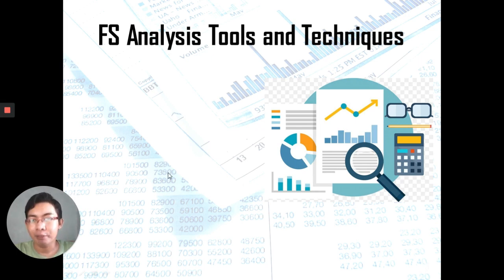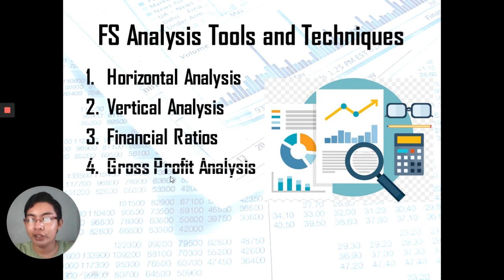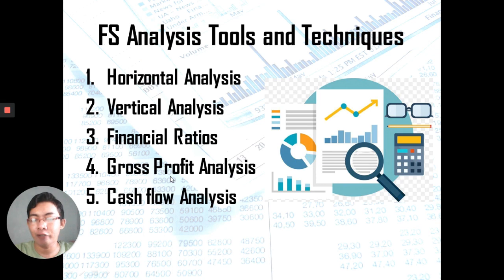Examples of Financial Statement tools include Horizontal Analysis, Vertical Analysis, Financial Ratios, Gross Profit Analysis, and Cash Flow Analysis. For today, we will be discussing the first two: Horizontal Analysis and Vertical Analysis. In subsequent videos, we will focus on Financial Ratios.